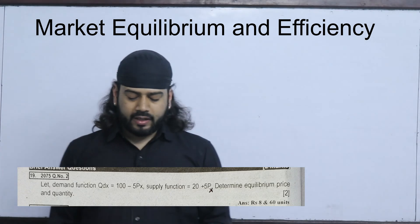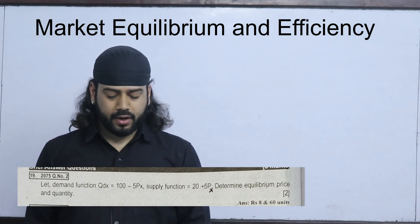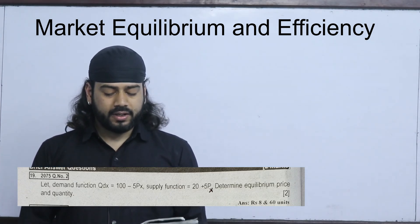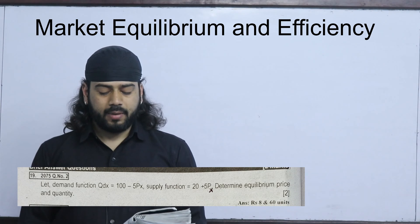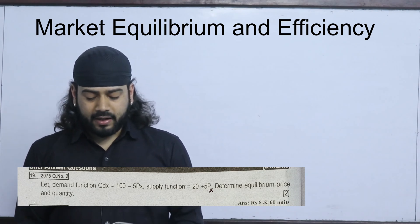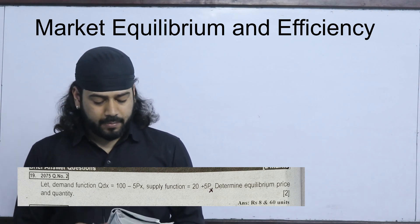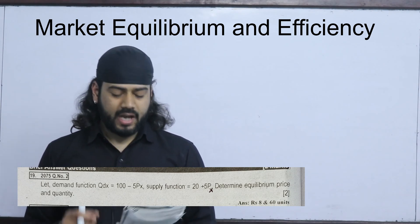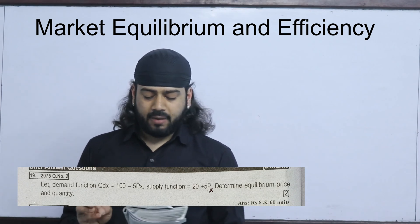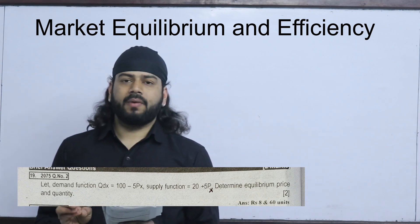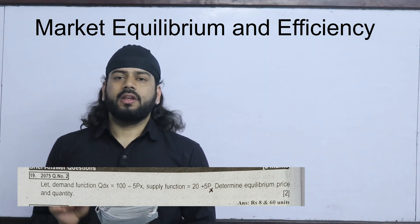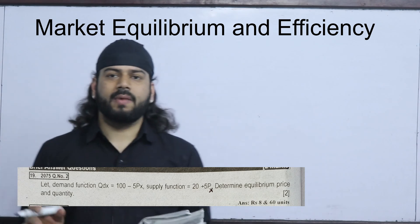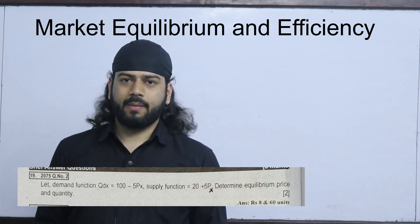Let the demand function Qdx = 100 - 5Px and the supply function Qs = 20 + 5P. We have to determine the equilibrium price and quantity given the demand function and supply function. In equilibrium condition, demand and supply are equal.